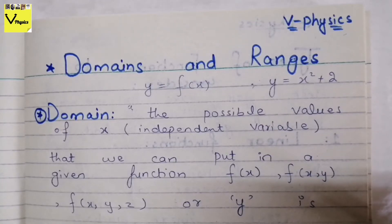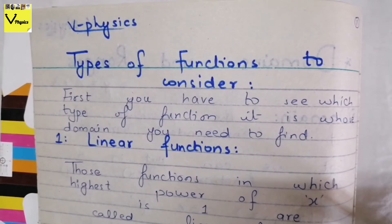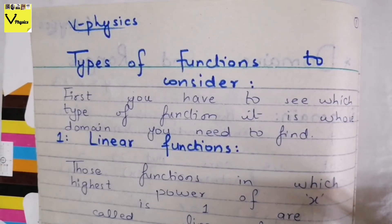So, the domain of a single-variable function: what are the most possible values of x, the independent variable, such that the function is neither infinite nor complex? Those values will be the domain. When you are given a function, you have to first see which type of function it is, and then use the appropriate procedure I am going to tell you to calculate the domain.